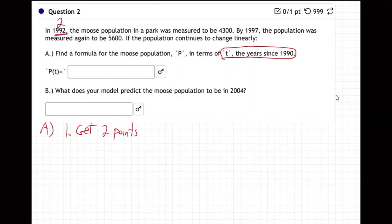So 1992, that's two years after 1990. Population was 4,300. So that's 2, 4300. This is T and P, or X and Y. Tracking with me? T years after 1990 and population of the moose.